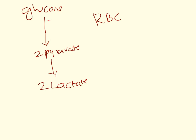When 1 glucose is going towards 2 pyruvate, initially there will be consumption of 2 ATPs. Then there will be production of 4 ATPs at substrate level phosphorylation. There are 2 substrate level phosphorylations in glycolysis: one is the phosphoglycerate kinase catalyzed reaction, and the other is the pyruvate kinase reaction. In these 2 reactions you get 2 ATPs each, so you gain 4 ATPs total.